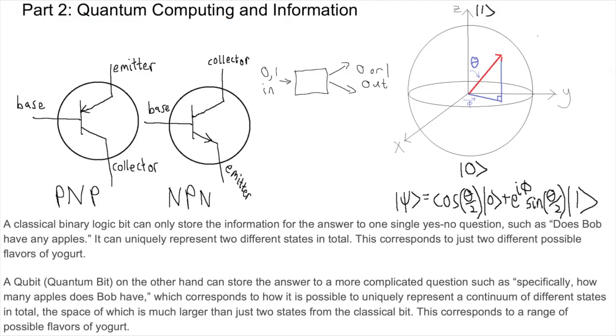A classical binary logic bit can only store the information for the answer to a single yes-no question, such as does Bob have any apples? It can uniquely represent two different states in total. This corresponds to just two different possible flavors of yogurt. A qubit quantum bit, on the other hand, can store the answer to a more complicated question such as specifically how many apples does Bob have, which corresponds to how it is possible to uniquely represent a continuum of different states in total, the space of which is much larger than just two states from the classical bit. This corresponds to a range of possible flavors of yogurt, not just two.